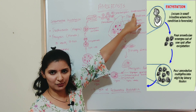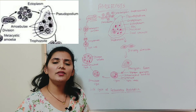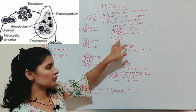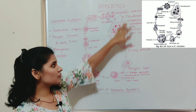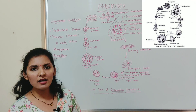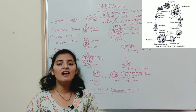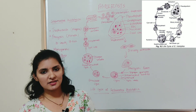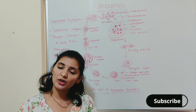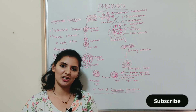At the end of this series of divisions, it forms eight uninucleate amoebulae, also called metacystic trophozoites. These metacystic trophozoites feed on the contents and tissues of the large intestine, grow in size, and form trophozoites. The trophozoite then repeats the same cycle in the new host or in the same host. That is how Entamoeba histolytica lives in the human large intestine and causes amoebiasis or amoebic dysentery. I hope this video will be useful — if you like it, please hit the like button and subscribe to my channel.